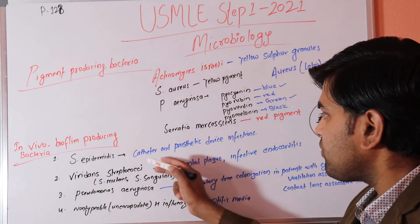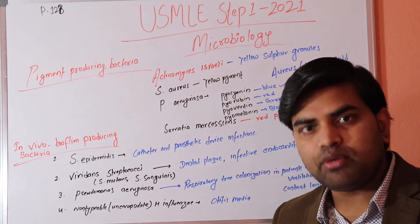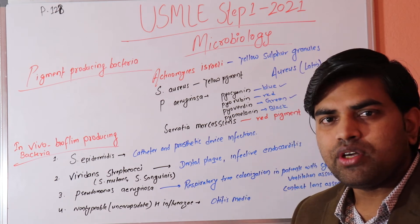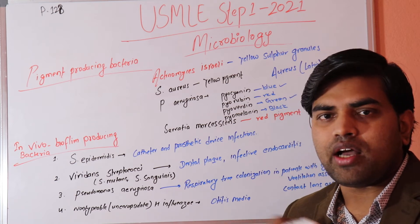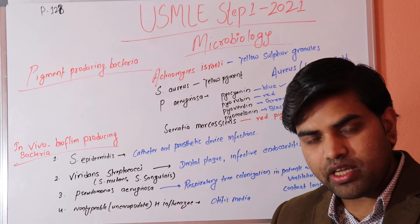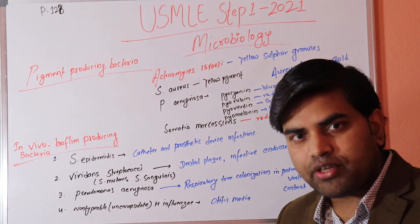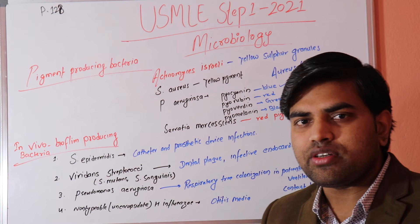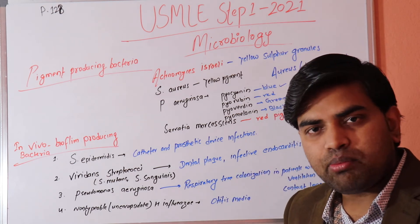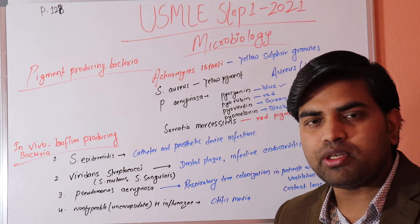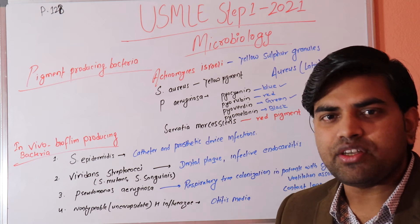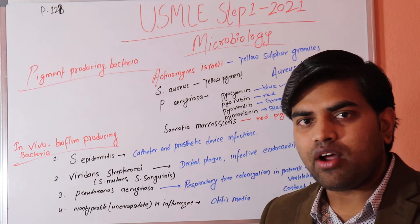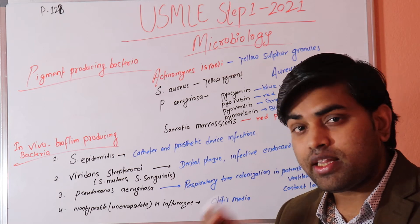Staphylococcus epidermidis is responsible for catheter and prosthetic device infections. Any device introduced into the body — hip replacement, knee replacement, PICC line, central catheter — if left long-term without changing IV lines, normal skin flora can colonize and form biofilm on that device. Antibiotics cannot eradicate it; the device must be surgically removed.